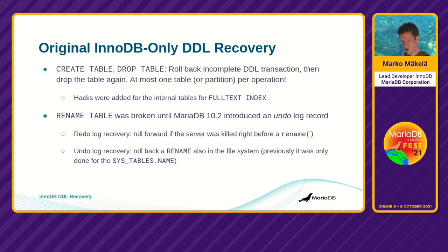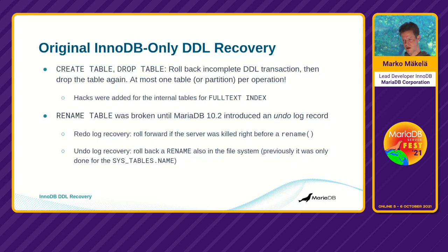In MariaDB 10.2.19, to support proper backup of TRUNCATE operations, we implemented better logging of rename operations. A new undo log record was introduced for RENAME TABLE. One could argue it's redundant because we could parse undo log records for the SYS_TABLES.NAME internal table. But unfortunately, the primary key of SYS_TABLES is not the table ID — it is the table name. In InnoDB, if a primary key is updated, it is logged as a delete of the old primary key and an insert of a record with the new primary key. So it would have been difficult to distinguish a rename from a create-and-drop, and this new record made it easier.